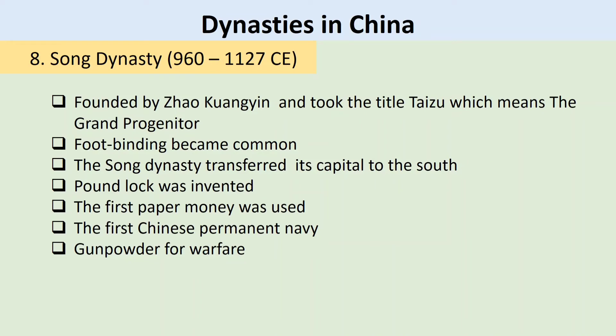Another achievement of this dynasty was the use of the first paper money, the first Chinese permanent navy, and the invention and use of gunpowder for warfare. Gunpowder, together with paper, printing, and the compass, are the four greatest legacies of China. But truly, there is so much more to credit China with.